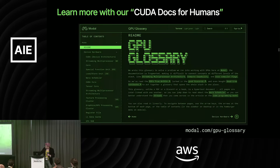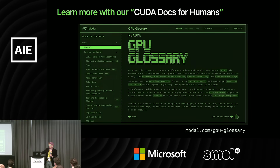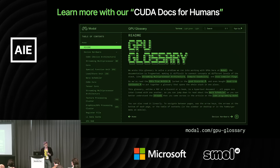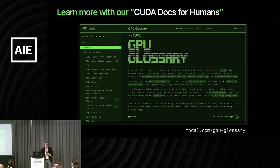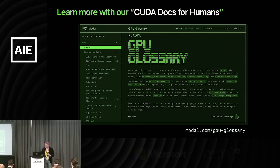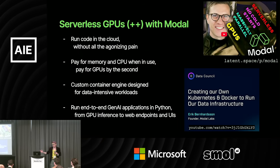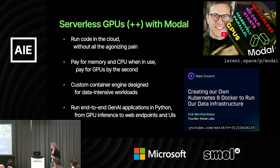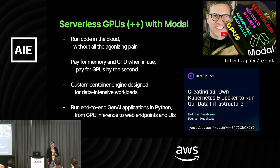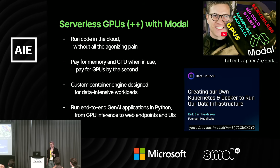If you want to learn more, I wrote a GPU glossary at modal.com/gpu-glossary — it's a CUDA docs for humans, an attempt to explain the whole software and hardware stack in one place with lots of links, so that when you're reading about a warp scheduler and need to understand what a streaming multiprocessor architecture is and how it relates to the NVIDIA CUDA compiler driver, it's one click away. If you want to run these on this hardware, the platform I work on — Modal, serverless GPUs and more — ripped out and rewrote the whole container stack to make serverless Python for data-intensive and compute-intensive workloads like language model inference work well.